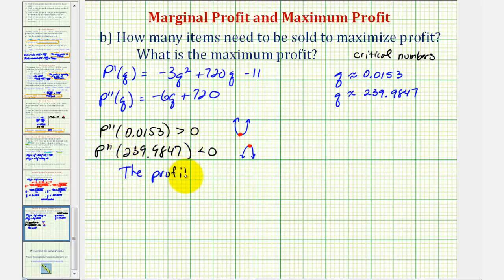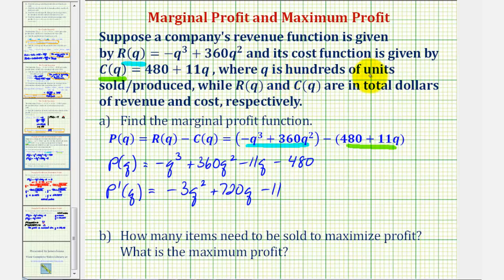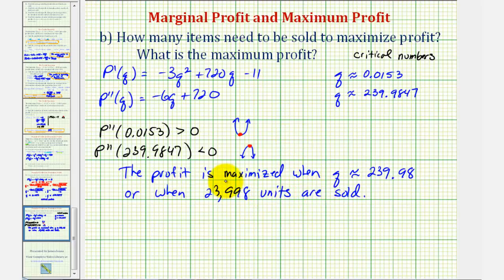We are asked to round q to two decimal places, so the profit is maximized when q is approximately 239.98. But remember, q is in hundreds of units, so multiplying by 100 means that approximately 23,998 units are sold. Our answer for the number of units is 23,998.